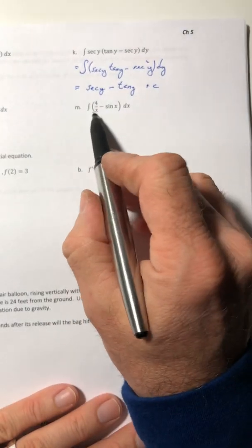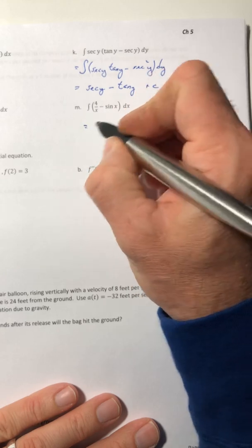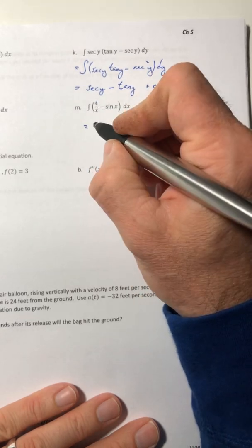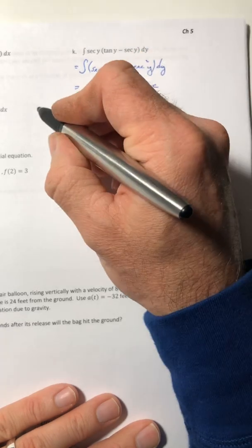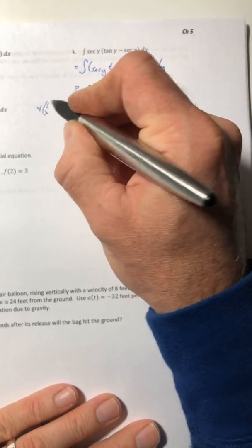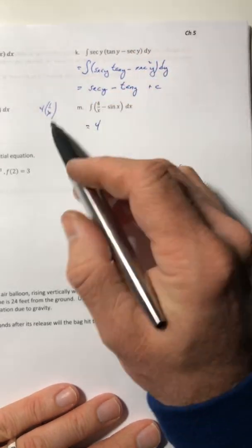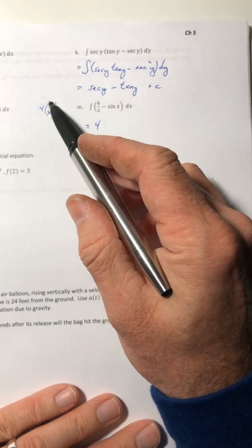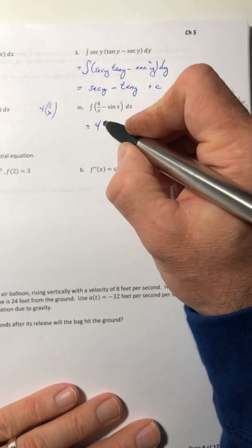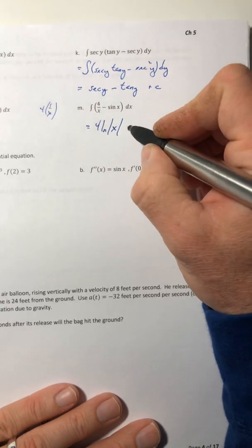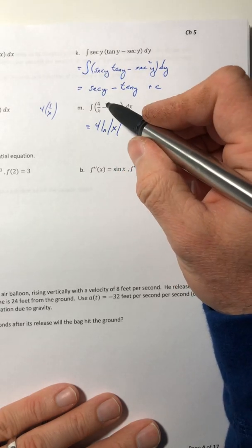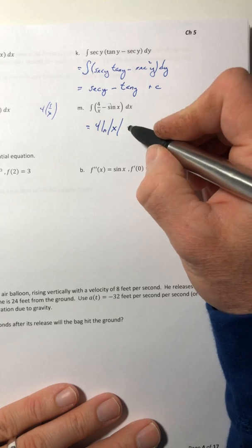And then just for fun, we'll do this 4 over x. So the 4, that's just your constant, just stays. So it's really like 4 times 1 over x. So the integral of 1 over x would be ln of the absolute value of x. And then the integral of negative sine is a positive cosine.